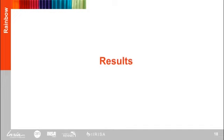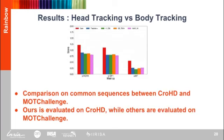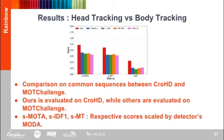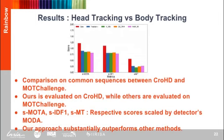We discuss the most interesting result of our work: a comparison between Headhunter Tracker and full-body trackers. We perform comparisons on the common sequences between CrowdHD and the MOT Challenge CVPR 2019 dataset. The same sequence ensures that trackers are evaluated on full-body and head bounding boxes of the same pedestrians in the scene. We evaluate our Headhunter-T on CrowdHD ground truth while evaluating published state-of-the-art methods on the MOT Challenge ground truth. Since we use a different object detector, we measure the ratio of tracking scores with respect to their object detector's score to obtain scaled scores. Our approach substantially outperforms other methods, indicating that tracking by head detection is more suited for environments involving high pedestrian density.